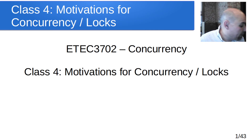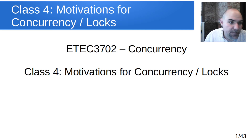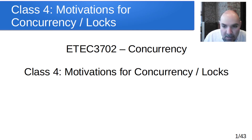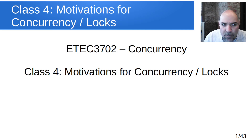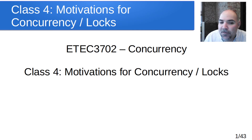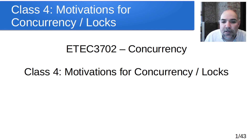Let's go and get started for the day. This is class four of concurrency and today we're going to do two things: talk about motivations for concurrency and then look at how locks work. Locks are a programming mechanism to control concurrency without using a software-only solution like Decker's algorithm or Peterson's algorithm, but rather an alternate mechanism to control synchronization between two concurrent processes.